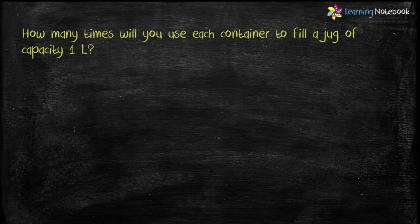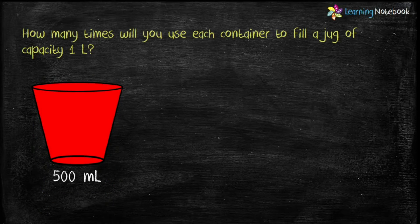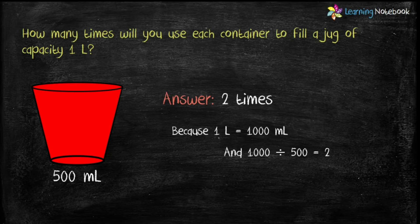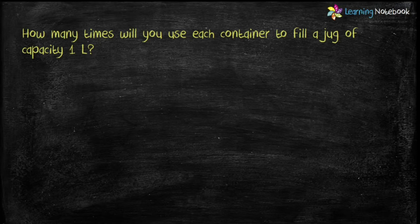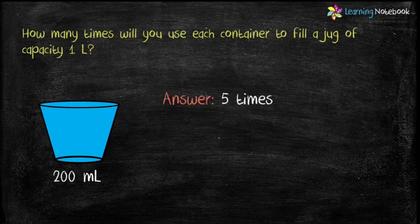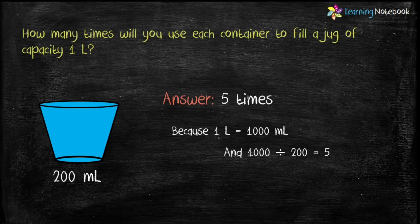The next container has a capacity of 500 milliliter. We divide 1000 by 500 and the answer is two, so we use this container two times to fill a one-liter jug. The last container has a capacity of 200 milliliter. We divide 1000 by 200 and the answer is five, so we use this container five times to fill a jug of one liter.